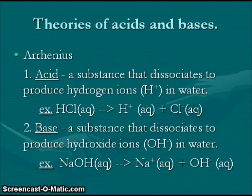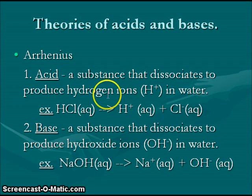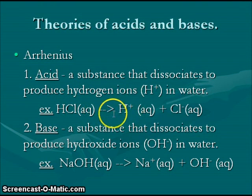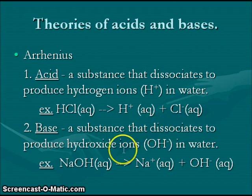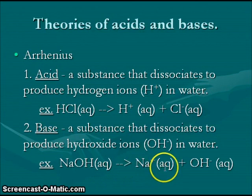Let's take a look at the different theories which describe the behaviors of acids and bases. The first is the Arrhenius theory, which says that an acid is any substance that will dissociate — break apart — to produce hydrogen ions when dissolved in water. An example is hydrochloric acid. Note that these hydrogen ions attach to a water molecule to form an H3O⁺ hydronium ion. Under the Arrhenius theory, a base dissociates to produce hydroxide ions in water, such as sodium hydroxide producing sodium ions and hydroxide ions.